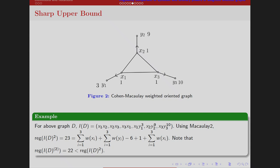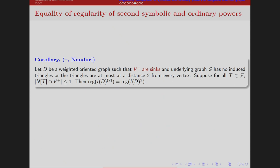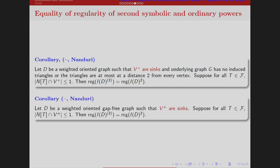We have given some conditions on the weights for which equality will hold. Under the same assumptions as before, with the additional condition that whatever triangles are present, their closed neighborhoods contain only one vertex with weight greater than 1, then equality holds. For the class of graphs with no induced triangles or triangles at distance at most 2, gap-free graphs also fall in this class — where a gap-free graph is the complement of a graph that has no induced 4-cycle.